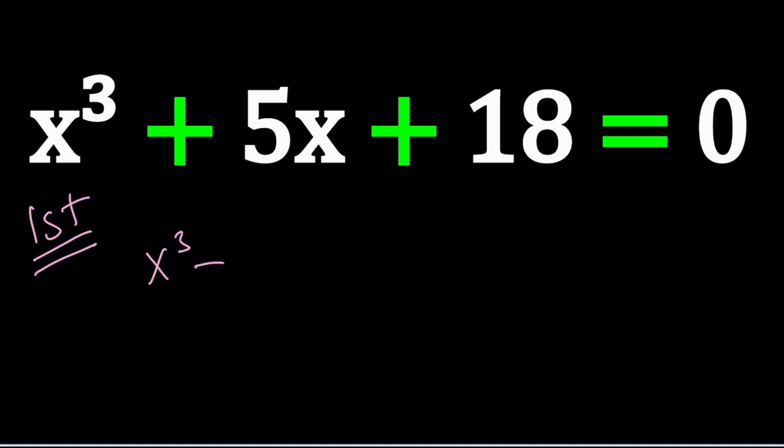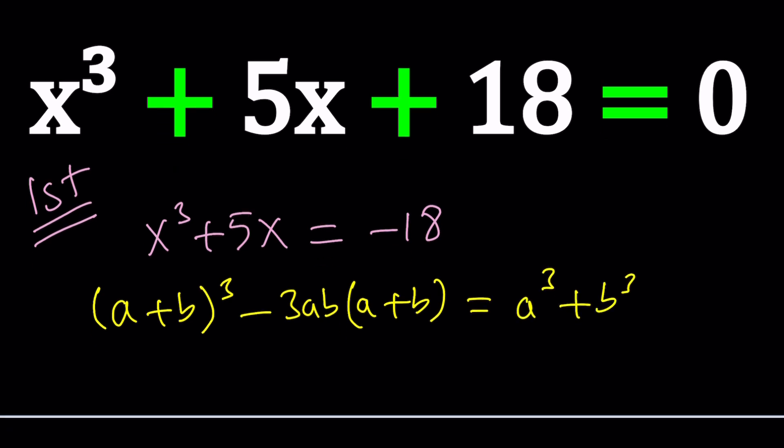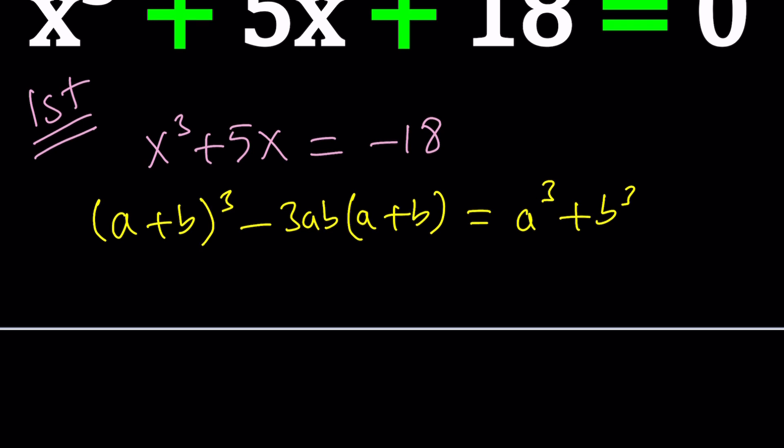We're going to first isolate the constant term and then use an identity which is (a+b)³ - 3ab(a+b) = a³ + b³. This identity can also be used for factoring expressions like sum of two cubes but that's not our topic.